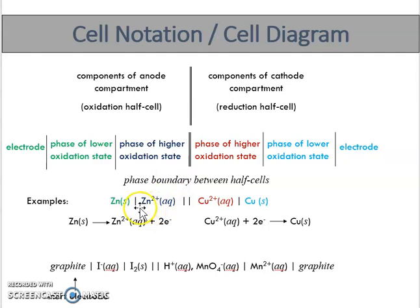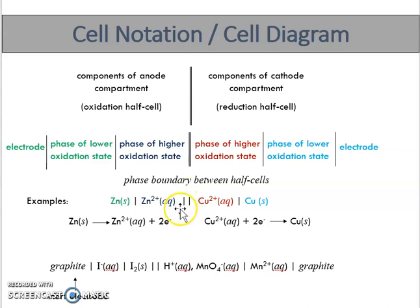First, determine which is the anode and which is the cathode, then place the anode on the left and cathode on the right. Separate changes in phase using a single vertical line — for example, zinc solid and zinc ion at the anode, and similarly at the cathode. The salt bridge is represented by a double vertical line. If the voltaic cell uses an inert electrode such as graphite, place the inert electrode at the outermost end.